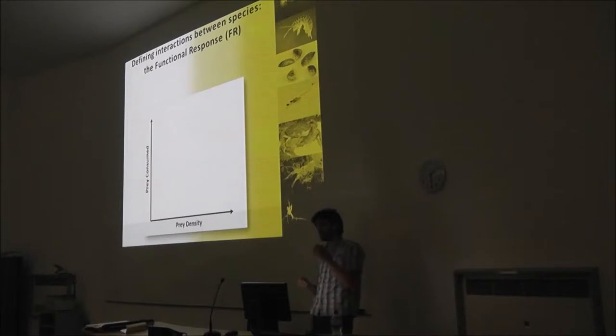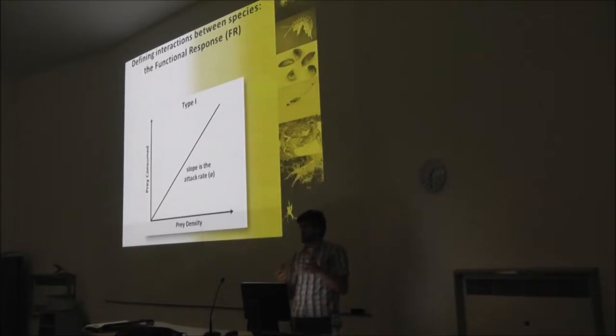The first one is defining interactions between species. We usually think of interactions between species in terms of their functional response, which is quite simply the relationship for a predator and its prey between prey consumption and the density of those prey. And these FRs take three broad forms. Type 1s are linear. Essentially, we can regard the slope to be the attack rate of the predator. These are a special case, and they're supposed to be specific to filter feeders, because filter feeders don't need to handle their prey like you and me. They just suck it in.